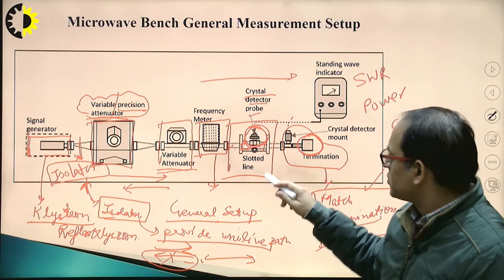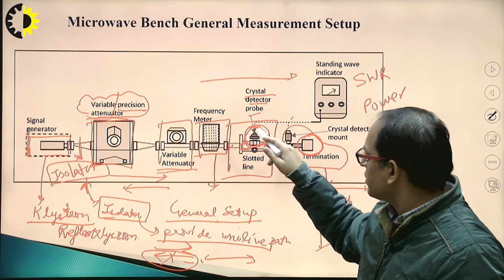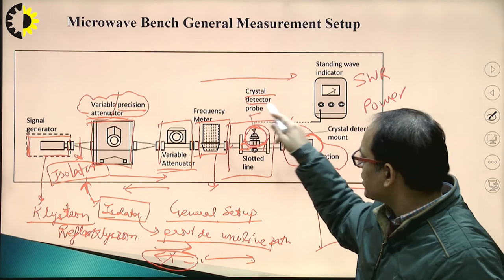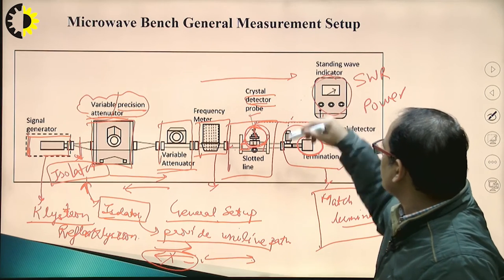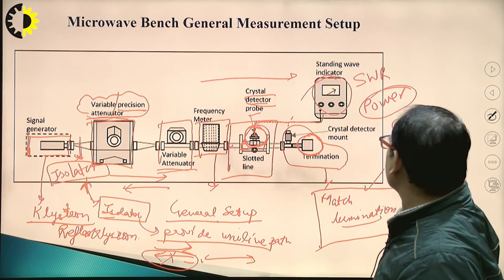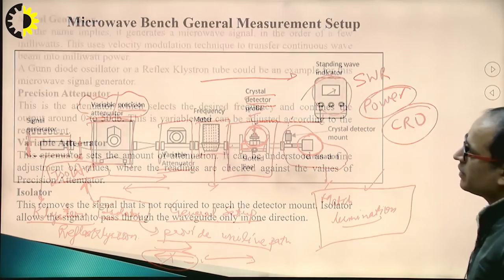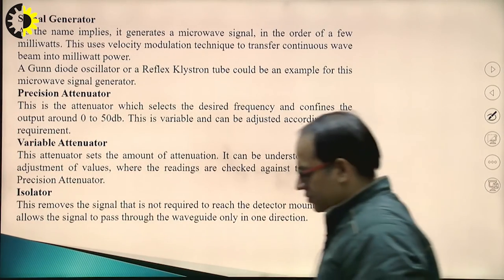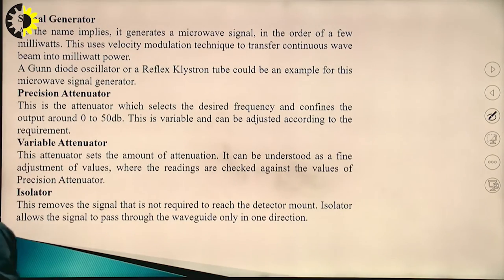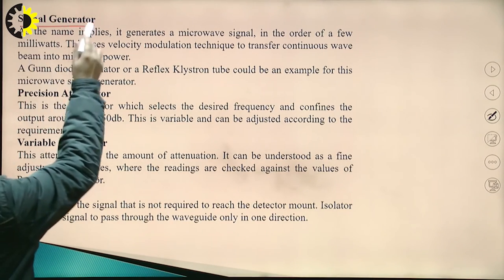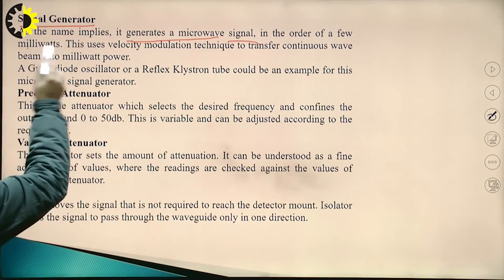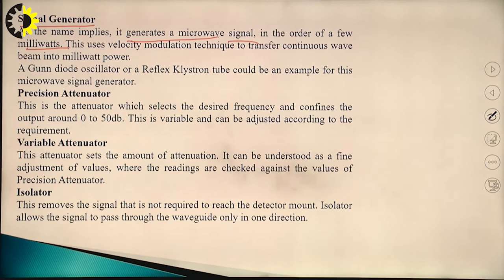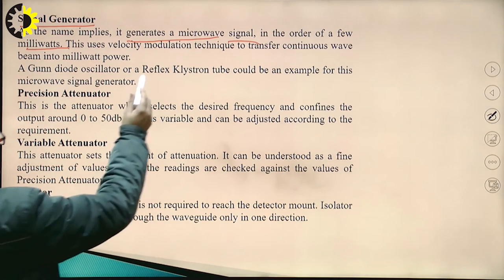The slotted line section also consists of a crystal detector mount probe. This probe can be connected to the VSWR meter, to a power meter, or to a CRO. The signal generator — as the name implies — generates a microwave signal in the order of a few milliwatts. For experimental purposes we use a reflex klystron or a Gunn diode oscillator as the signal generator.